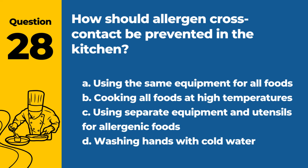Question 28. How should allergen cross-contact be prevented in the kitchen? a. Using the same equipment for all foods. b. Cooking all foods at high temperatures. c. Using separate equipment and utensils for allergenic foods. d. Washing hands with cold water. Answer: c. Using separate equipment and utensils for allergenic foods. This helps prevent cross-contact and protects individuals with food allergies.